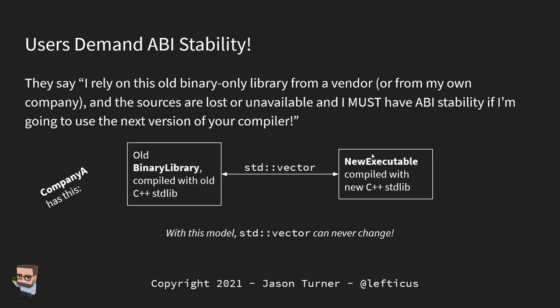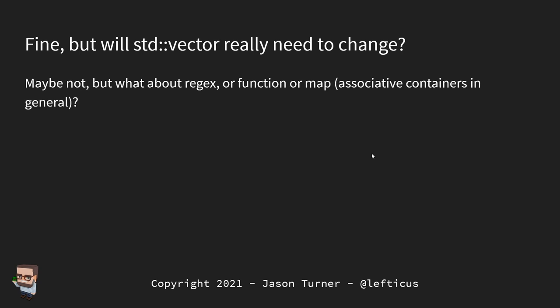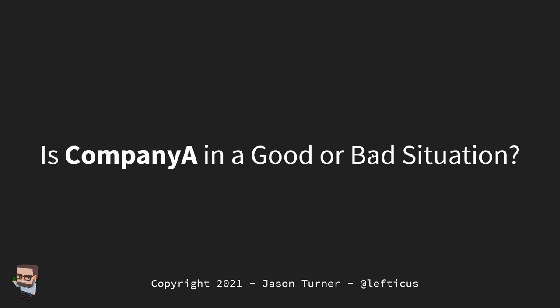In this model, std::vector can never change in any significant way. Does std::vector really need to change? That's a reasonable question, but we already mentioned there could be fixes to regex, to std::function, to associative containers in general. We are definitely holding things back.